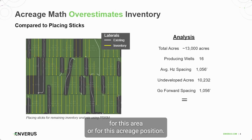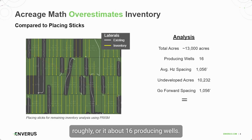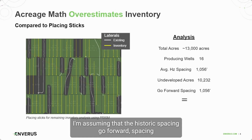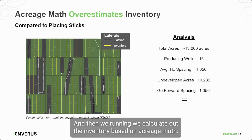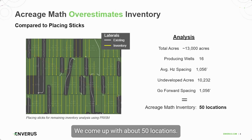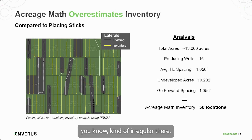This acreage position is about 13,000 acres with roughly 16 producing wells. Assuming historic spacing and go-forward spacing remain about the same — around five wells per section — when we calculate out the inventory based on acreage math, we come up with about 50 locations.